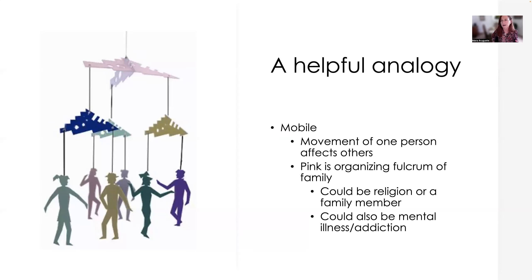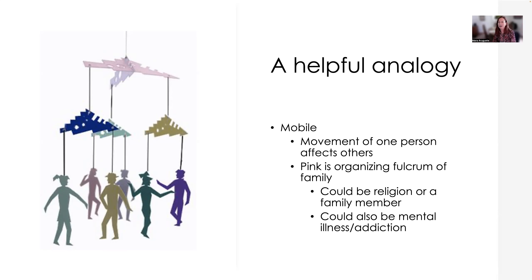Think about this mobile in the picture as an analogy for the family systems approach. The movement of one person — if I were to pull on, for example, the dark purple guy — that is going to affect all the other family members. It's going to affect that dark green guy the most, but it's going to start moving all the other family members. A change in any one person tends to affect the whole family. That little pink thing at the top is this organizing force — a fulcrum — behind the whole family. Sometimes that could be religion, a single family member, or it could also be a mental illness or an addiction.